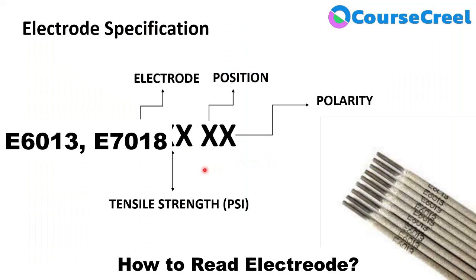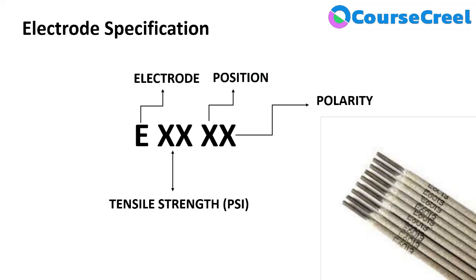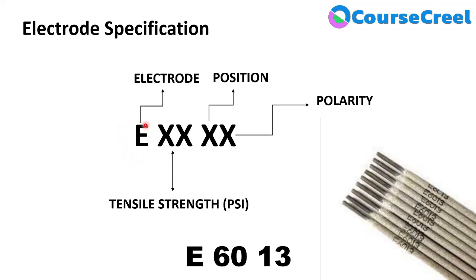Here you can see the code E6013. The first alphabet 'E' represents electrode, or the method of manufacturing — which is extrusion. So the first letter represents electrode or the manufacturing method of the electrode.